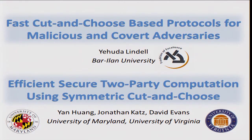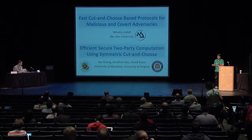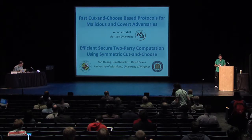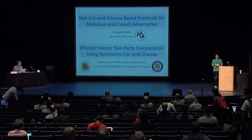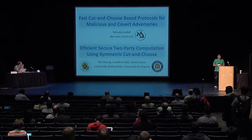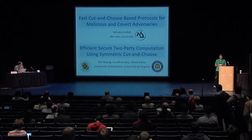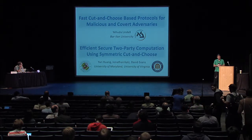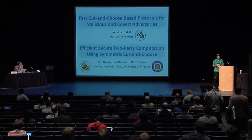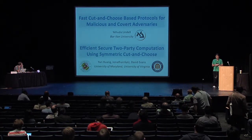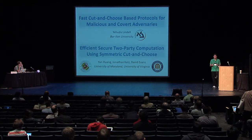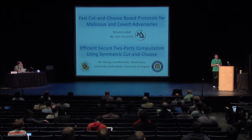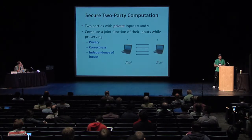Good morning, and thank you. As Nigel mentioned, there are two papers here: 'Fast Cut-and-Choose-Based Protocols from Malicious and Converted Adversaries' by myself, and 'Efficient Secure Two-Party Computation Using Symmetric Cut-and-Choose' by Yen Huang, Jonathan Katz, and David Evans. I'm going to give the general intro and talk about my paper, and then Yen will take over and talk about his paper.